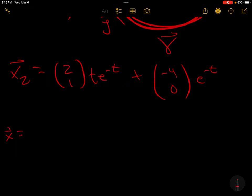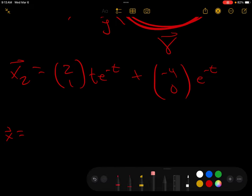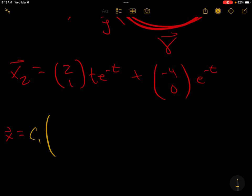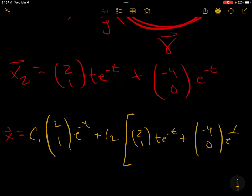And finally, the solution is c1 times the first solution plus c2 times the second solution. Note where the c2 is. It's in front of x2. You don't pick up a c3 over here.